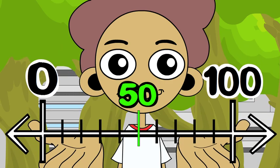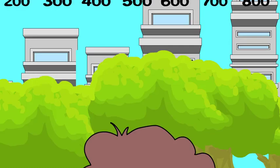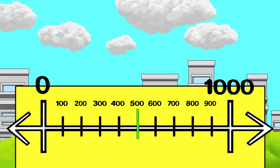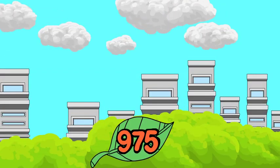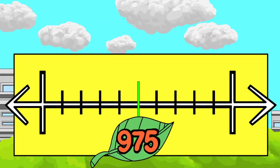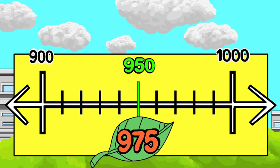And sometimes the nearest hundred is 1,000. Look at 975. The benchmarks are 900 and 1,000, and the midpoint is 950.